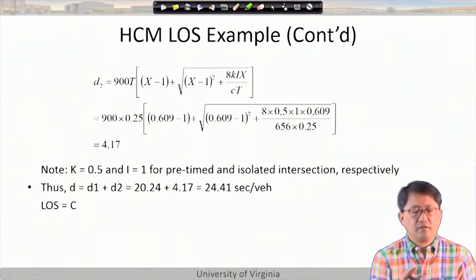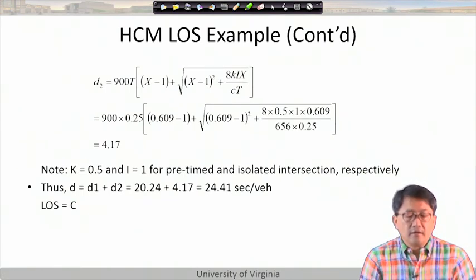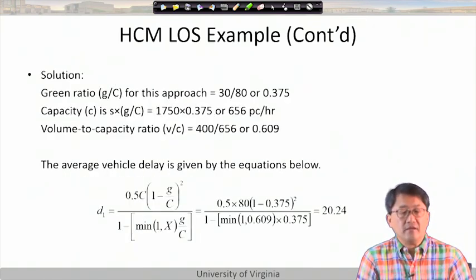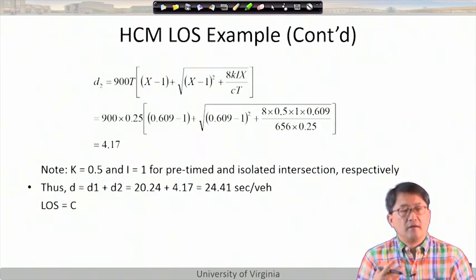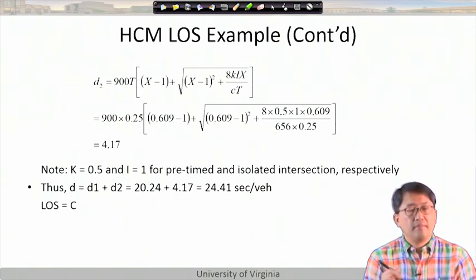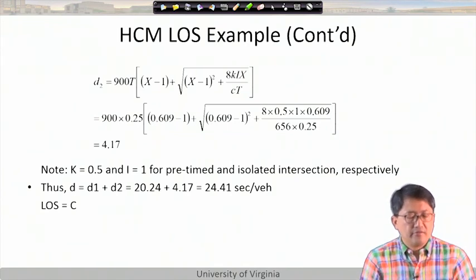For the d2 equation, when v/c ratio is small, d1 dominates. When v/c ratio gets close to 0.95 or higher, d2 becomes fairly large due to fluctuations. The d3 term is ignored in this example.